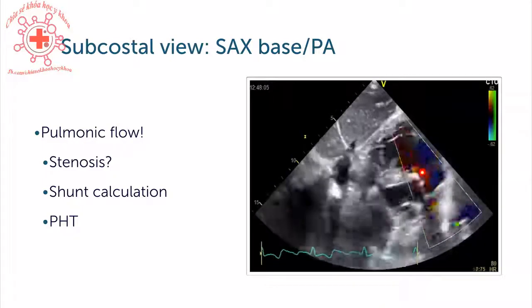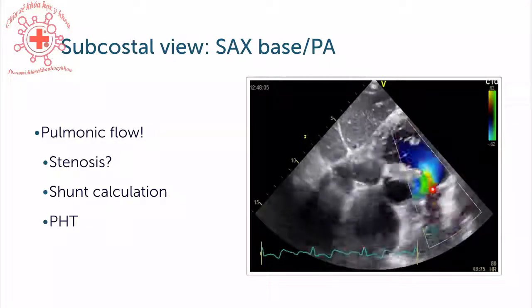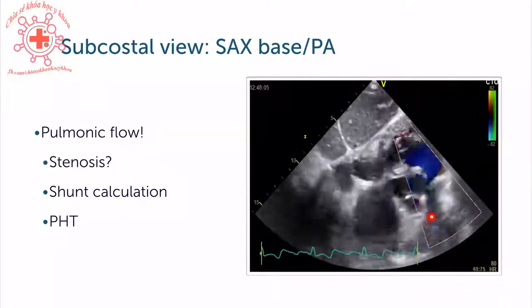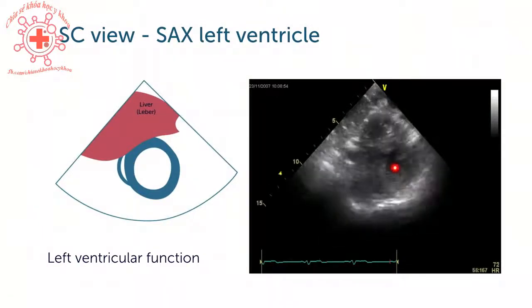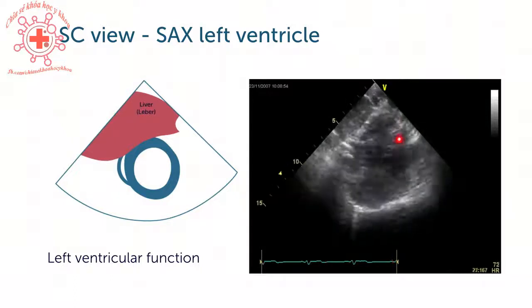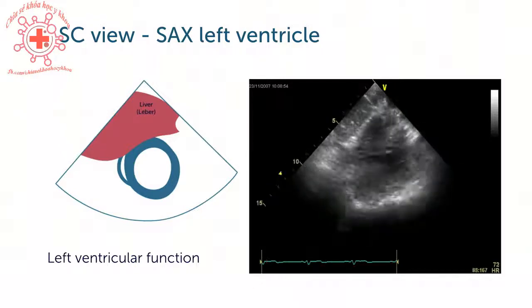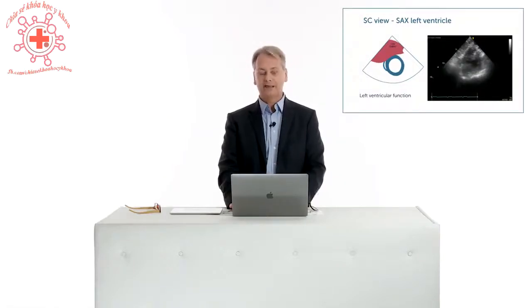Here we're applying color Doppler and we see turbulent flow at the pulmonic artery and pulmonic valve, denoting pulmonary stenosis — a beautiful example of what we can do with a subcostal view. The short axis view at the level of the ventricle is used to assess left ventricular function; you can nicely see the septum and normal LV function. You can also detect the size of the right ventricle and determine whether it's dilated in relationship to the left ventricle — the same indications as the parasternal short axis view apply.